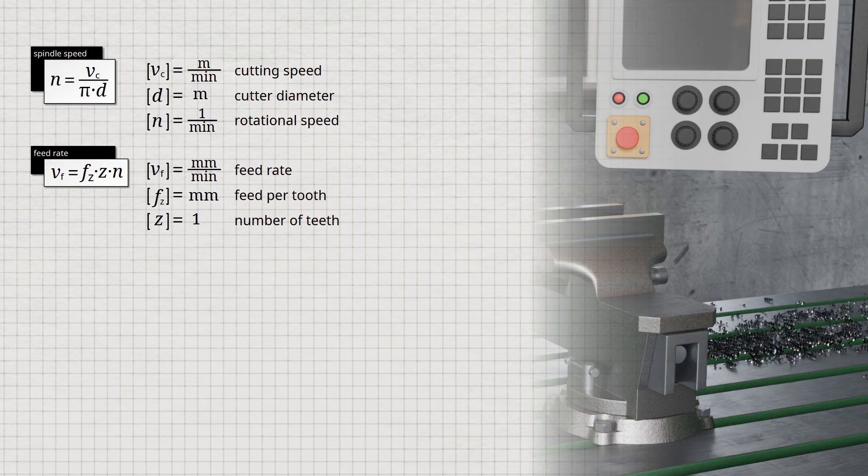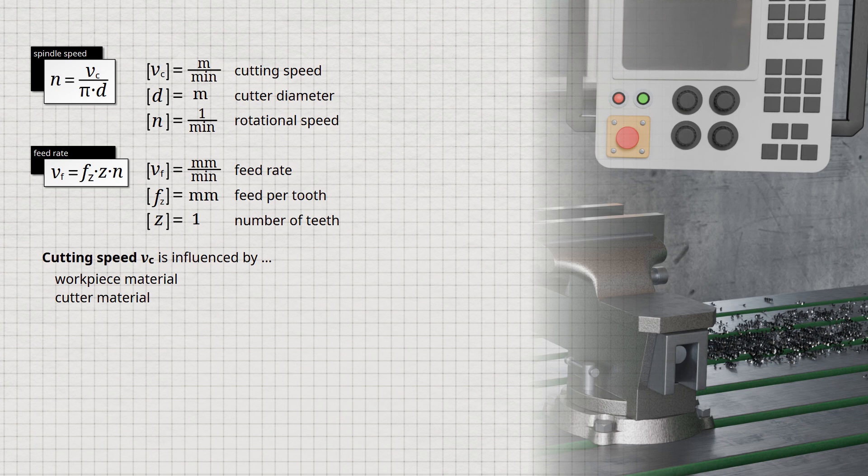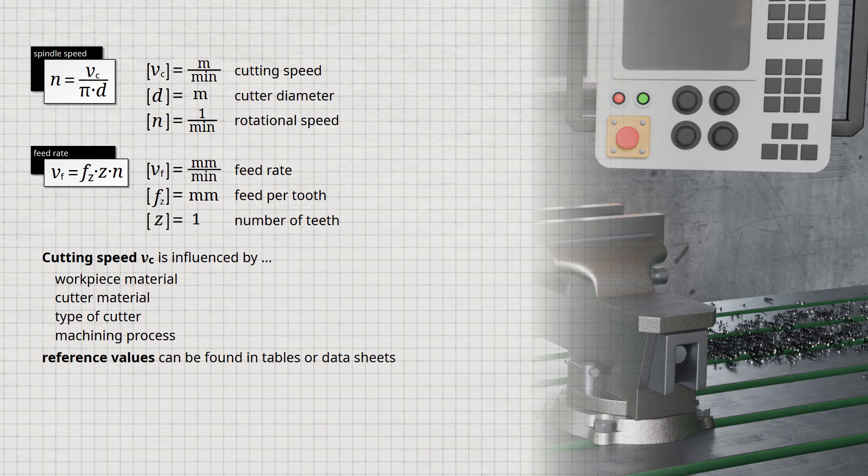The cutting speed in milling depends on a variety of factors, such as the material being machined and the tool material of the cutter, that is, whether it is a high-speed steel cutter or a cutter with indexable carbide inserts. Additionally, the cutting speed depends on the type of cutter, for example, whether it is an end mill, a face peripheral cutter, or a face mill. The selected machining process, whether roughing or finishing, is also decisive. Reference values that take all these factors into account can be found, for example, in machinist handbooks or in the tool manufacturer's data sheets.